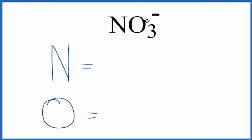If we look at the formula here, this N, there's nothing written. We assume there's a one there. So we have one nitrogen atom and then three oxygen atoms.